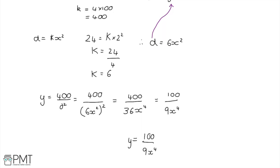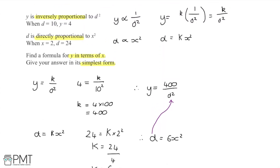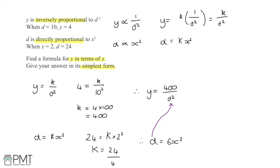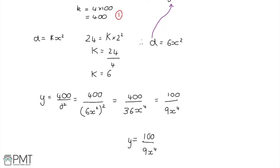As for how each of the marks were awarded: going back to the start, I gained a mark for setting up each of the two proportional equations — one mark each. I then gained another mark for finding one of the constants of proportionality, either lowercase or uppercase k. The fourth mark was for the process of substituting d equals 6x squared to find y in terms of x. The fifth and final mark is for the correct answer of 100 over 9x to the power of 4.